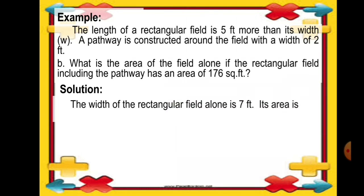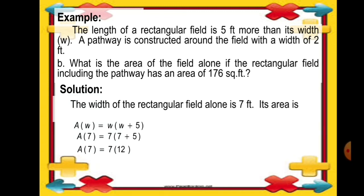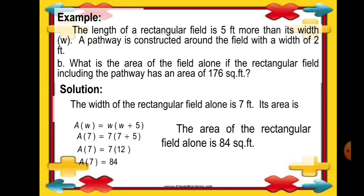The width of the rectangular field alone is 7 feet. The area of the field is given by W times W plus 5. Substituting 7 for W: A of 7 equals 7 times the quantity of 7 plus 5. Adding first, 7 plus 5 equals 12, then 7 times 12 equals 84. The area of the rectangular field alone is 84 square feet. Now it's your turn — try to answer the activity.